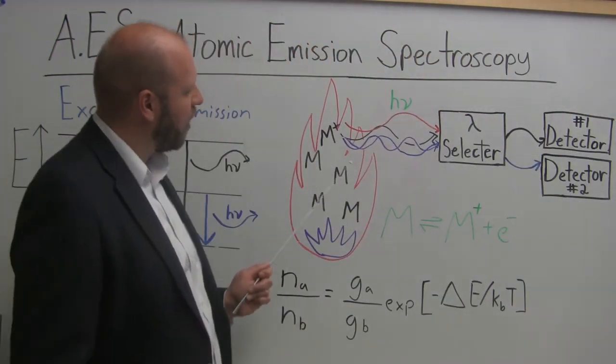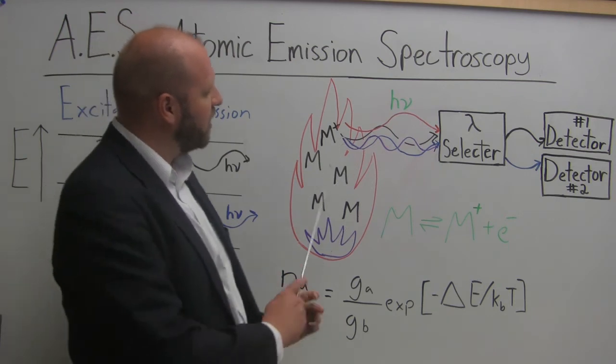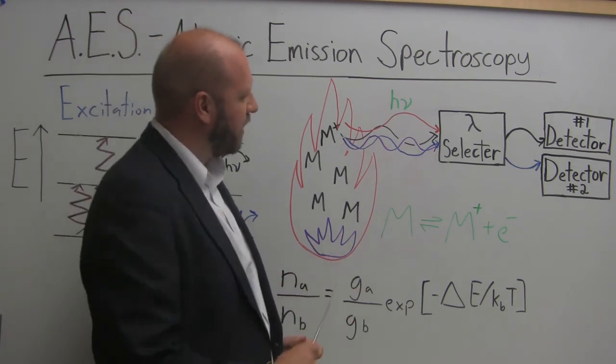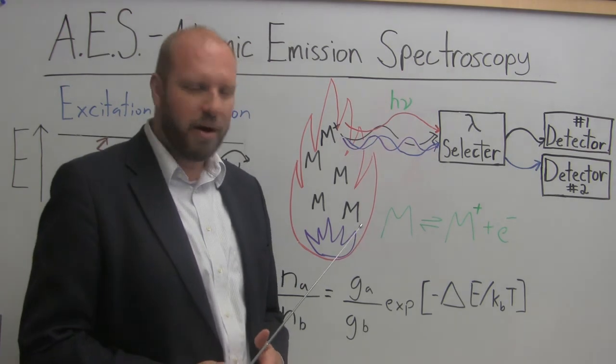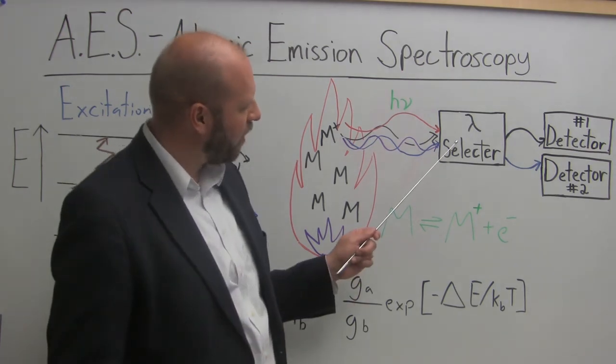Now, if we look at our atoms, they're going to be emitting wavelengths of light. Along with our flame or plasma, we'll also have wavelengths of light emitted. We're going to have some sort of wavelength selector.